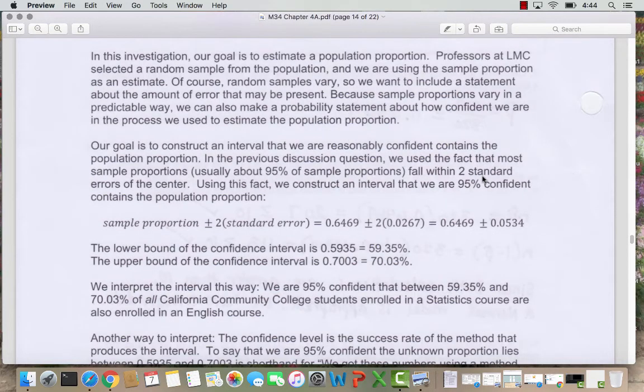So our goal is to estimate a population proportion. We want to try to make an estimate that falls within two standard errors of the center. And so using that fact, we construct what we call a 95% confidence interval. So I start with the sample proportion.